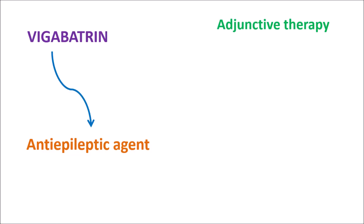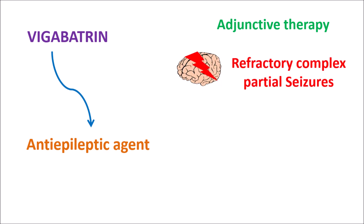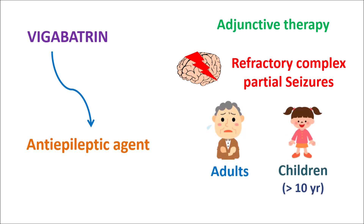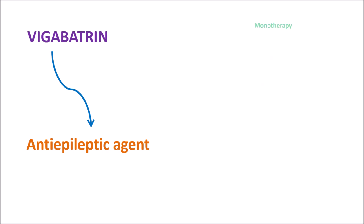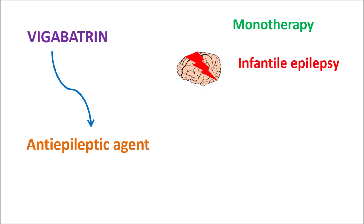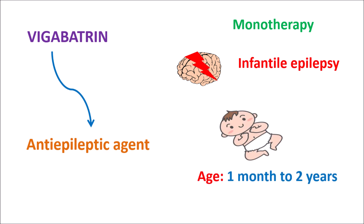Vigabatrin can be used as an adjunct therapy alongside other anti-epileptic agents in the treatment of refractory complex partial seizures. 'Complex' indicates seizures associated with loss of consciousness; 'partial' means they affect a particular area of the brain; and 'refractory' means they are not easily treated with other anti-epileptic agents. This drug can be given both to adults and to children with age greater than 10 years. It can also be used as monotherapy for infantile epilepsy in infants aged one month to two years.